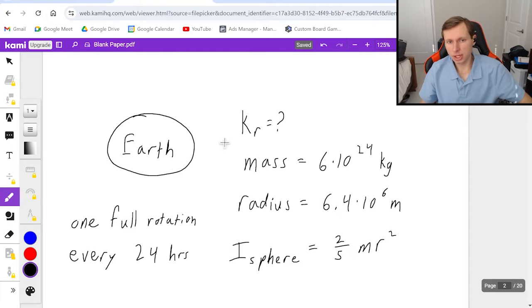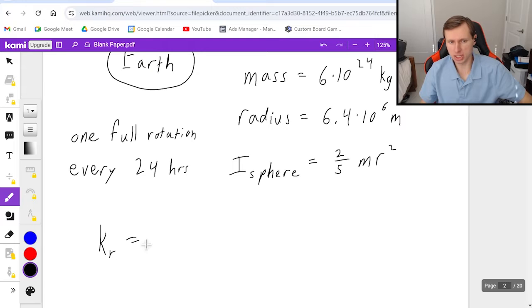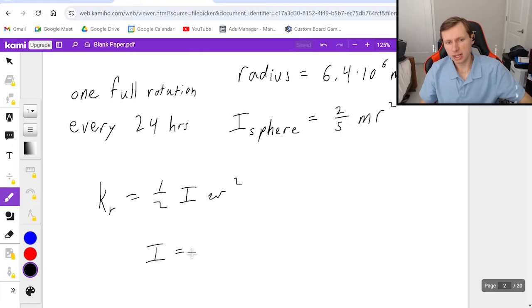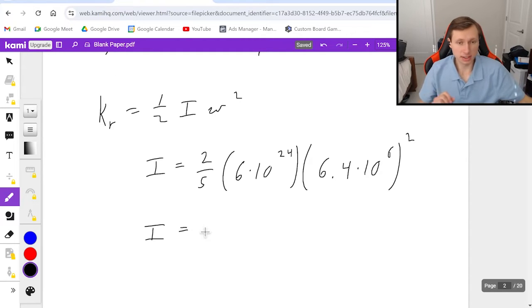So first, let's remember the equation for Kr, which we literally just said a second ago, one-half I omega squared. If we want to find I, it's pretty simple. I gave you the mass, I gave you the radius, and I gave you the equation. So we can easily plug that in. I equals two-fifths times the mass, 6 times 10 to the 24th, times the radius squared, so that's 6.4 times 10 to the 6th squared. If I plug this in a calculator, this is going to give me a massive number of 9.83 times 10 to the 37th power. Don't worry about the units right now. This is just the moment of inertia.